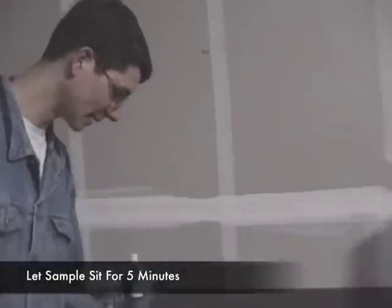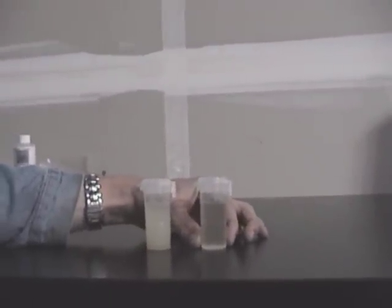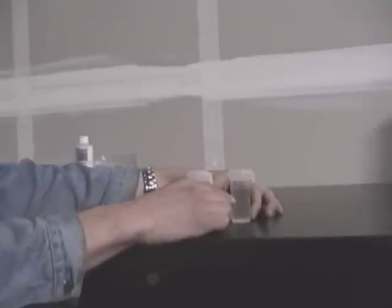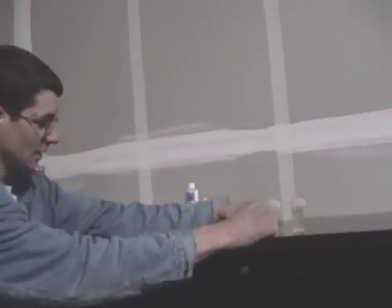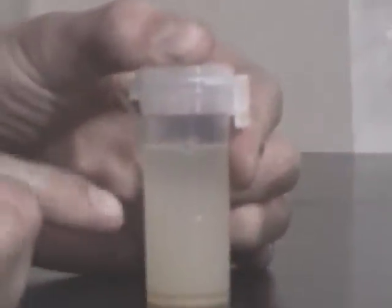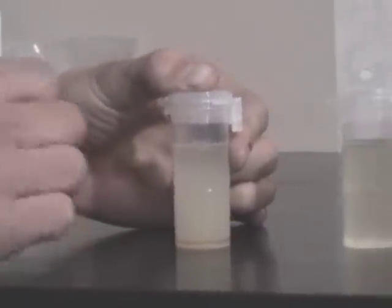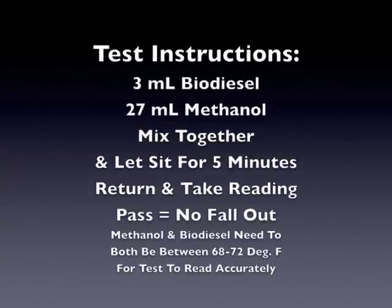Now we return to these samples about five minutes later and observe what's happened. The sample likely to pass ASTM has stayed clear, because the biodiesel dissolved into the methanol — it's molecularly suspended in the solution and can't settle. The sample that was foggy, which had a high amount of triglycerides in it, is still foggy because it has small particles of fuel floating around that haven't dissolved. We also see a second phase layer on the bottom — fuel that was unable to dissolve and has started to settle out of the solution.